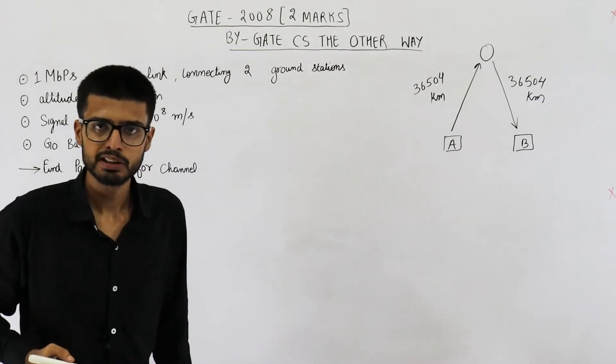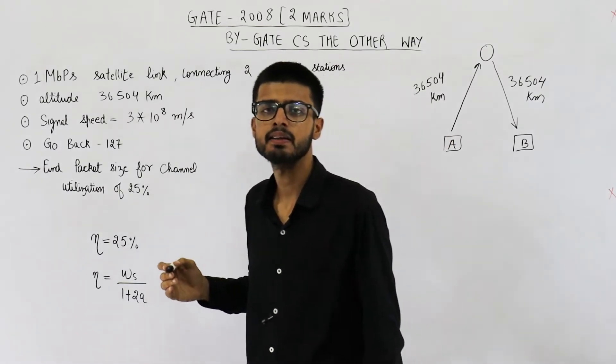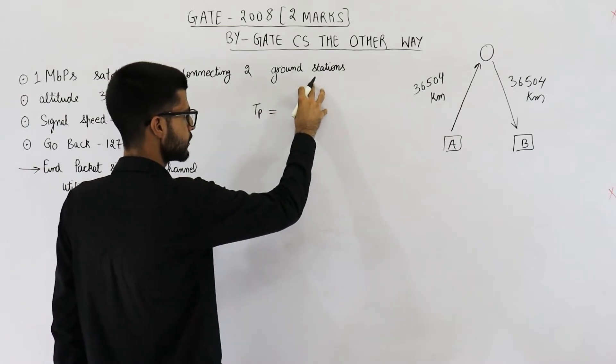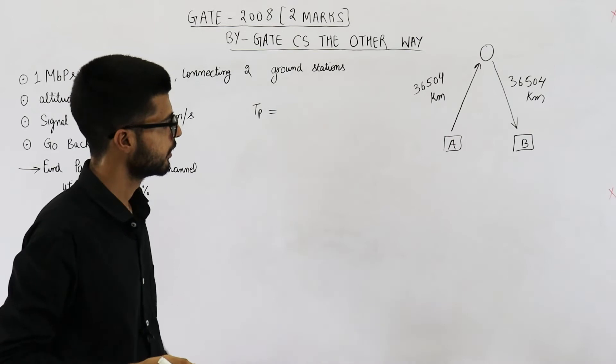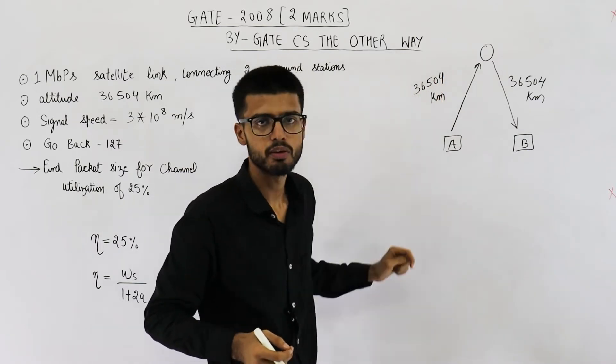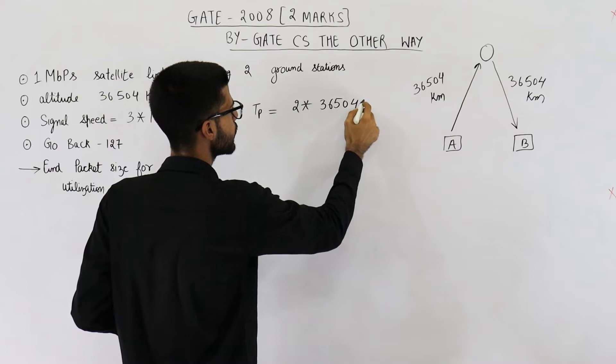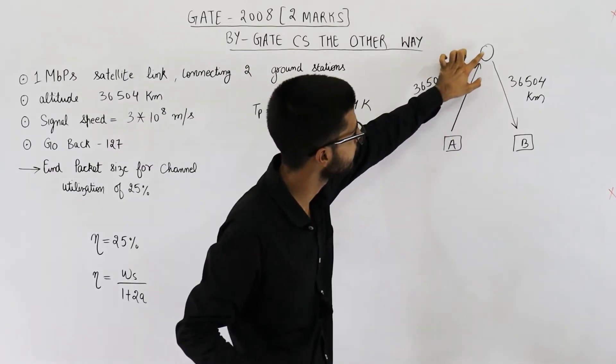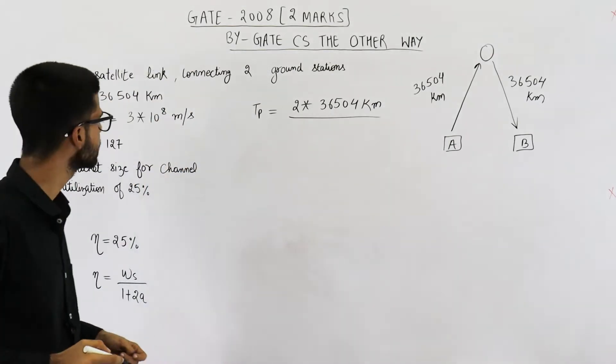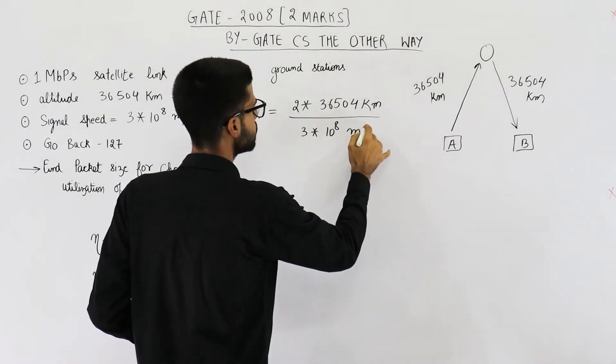Now let us find out propagation delay and transmission delay. Propagation delay is defined as distance between sender and receiver divided by the signal speed. So Tp, which is propagation delay, will be distance divided by signal speed. What is the distance? Distance between the two nodes that want to communicate with each other is actually twice of this value. So I am taking distance to be equal to 2 × 36,504 km, because data is actually taking this path. So distance divided by signal speed. Signal speed is given as 3 × 10^8 m/s. So divided by 3 × 10^8 m/s.